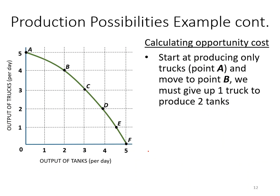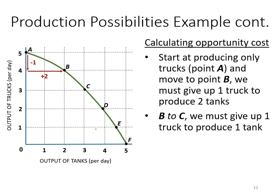For the production possibility curve, you can also calculate opportunity cost in detail. Starting at point A (producing only trucks — five trucks), if you move to point B, you are increasing the number of tanks. The opportunity cost for these two extra tanks is one truck: moving from A to B, you give up one truck to produce two tanks. Then moving from B to C, tanks increase from two to three, and trucks decrease from four to three — so you must give up one truck to produce one more tank, making the opportunity cost for the third tank one truck.